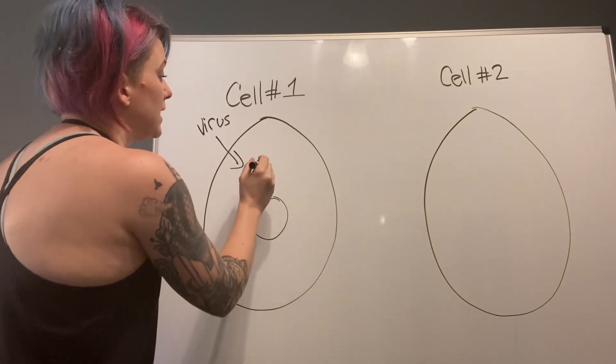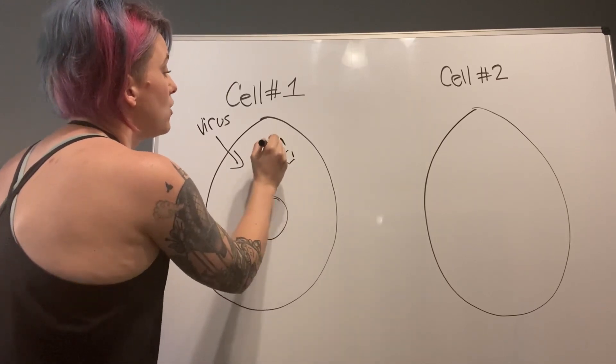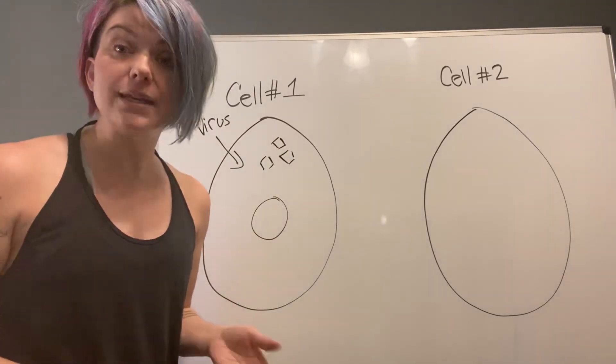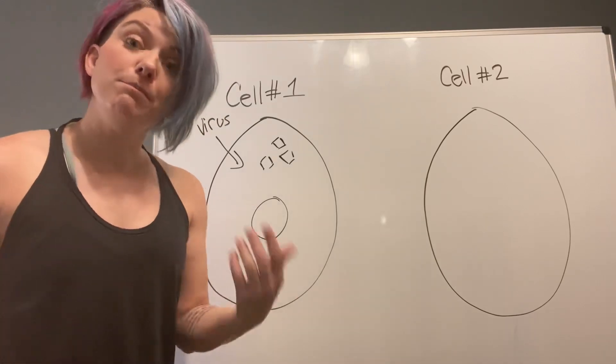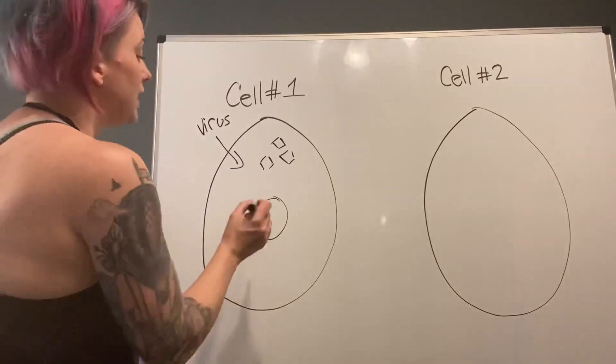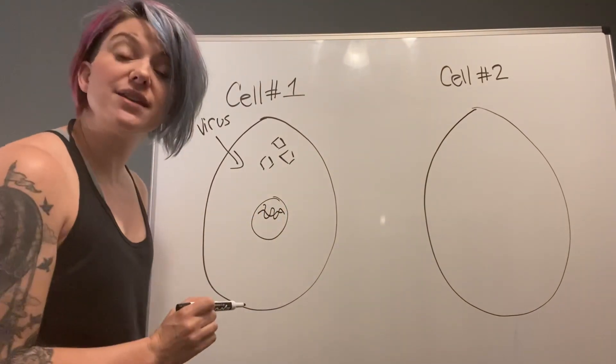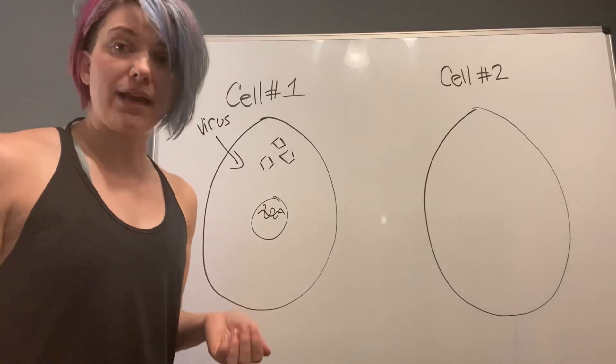The virus comes in and is replicating a bunch more viruses inside the cell, which are eventually going to be released to be able to infect other cells in the body. Meanwhile, some of that viral RNA that got in can actually signal to the DNA that's inside the nucleus to make interferon alpha and beta.